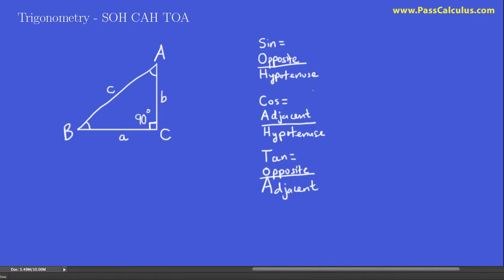Now, whenever you use SOHCAHTOA, make sure you only apply it to a right triangle. The very first thing we have to do when we do a trigonometry problem like this is decide on an angle to look from, and we never look from the right angle.